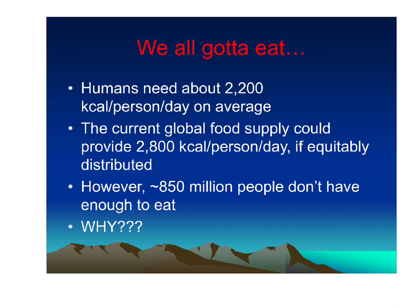Humans all have to eat — we are omnivorous creatures and we consume a fair amount of resources feeding ourselves. Humans need about 2,200 kilocalories per person per day on average. The current global food supply could provide 2,800 kilocalories per person per day if it were equitably distributed. The current global food supply is more than adequate to feed everybody; the problem is it's not equitably distributed — some areas have too much, some don't have enough.